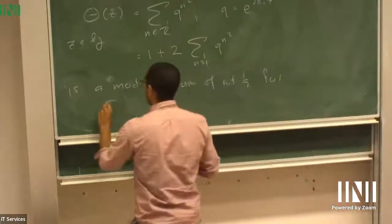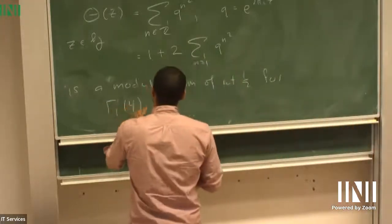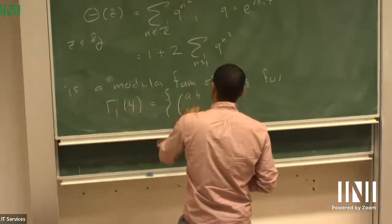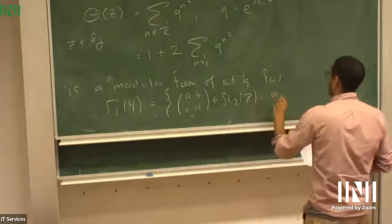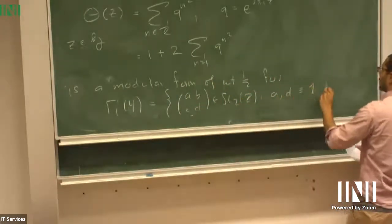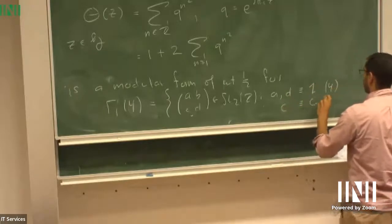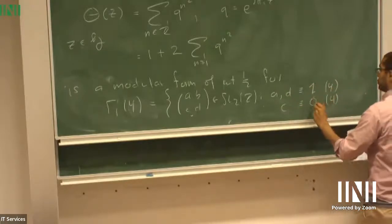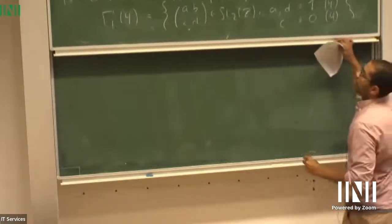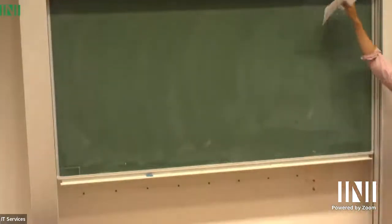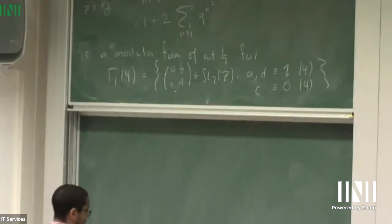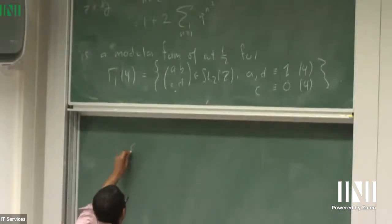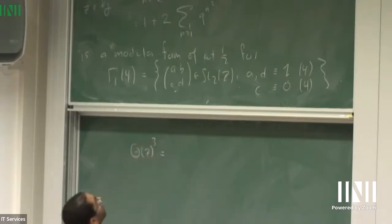Gamma 1 of 4 is the set of matrices A, B, C, D in SL2Z such that A and D are congruent to 1 mod 4, and C is congruent to 0 mod 4. This is the simplest modular form of half-integral weight. The next simplest modular form of half-integral weight you can obtain just by cubing this theta function. So consider the cube theta of Z cubed, and let's look at its Q expansion.